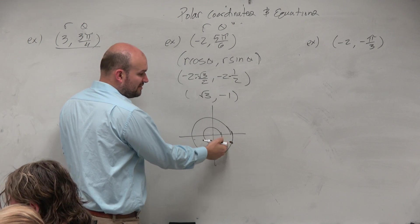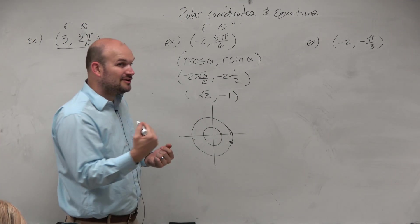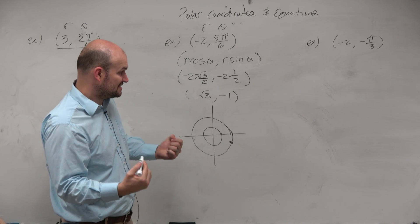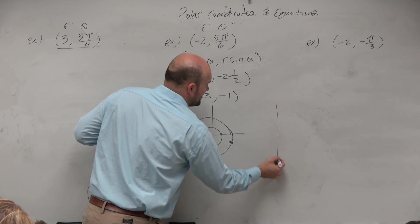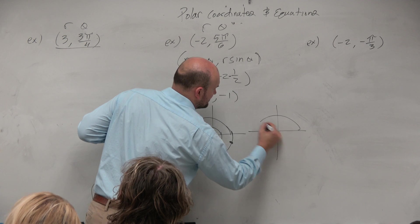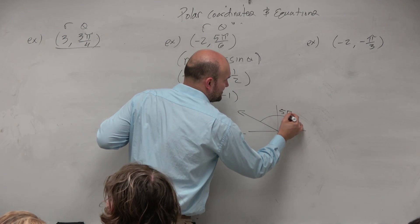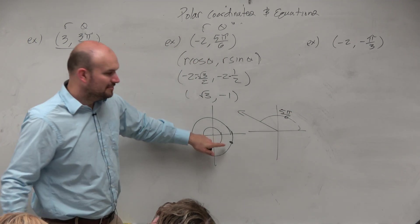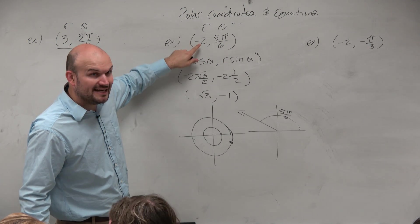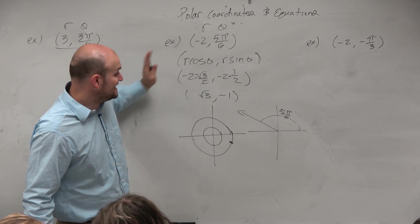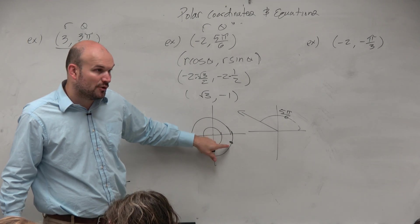So what we want to do is, can we find different representations of this point? This is confusing, because if you just think about the angle, 5π over 6 is over here — that's the angle 5π over 6. But if you convert it to rectangular form, this negative radius negates both of those coordinates. So that's why the point is over here.